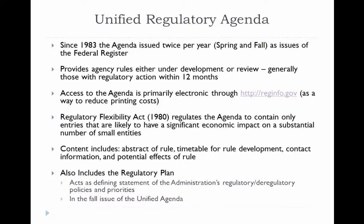The content of the Unified Agenda includes the abstract of the rule, the timetable the agency is planning on developing or proposing the rule, the potential effects of the rule and how it will affect different industries or entities, and contact information. In the fall edition of the Unified Agenda, the Regulatory Plan is also included — not in the spring, but in the fall. This Regulatory Plan is the statement of the Administration's policies and priorities toward the regulatory system.